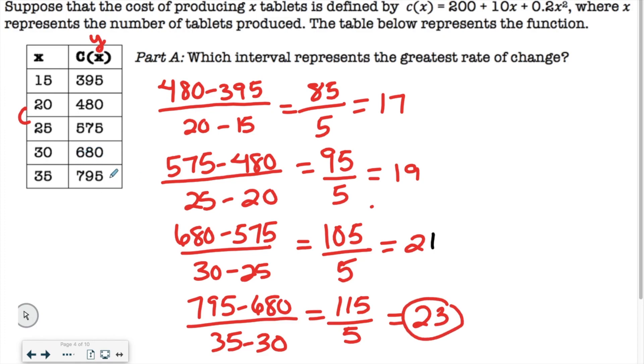So between 680 and 795. So you would write that like this: 680, 795. So that would be 30 to 35. Or, actually, you know what? We did the Y value, or the X value. So that would be 30 to 35. And it's not asking for anything else. So that's the greatest rate of change is the last one.